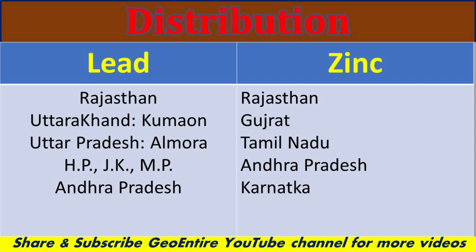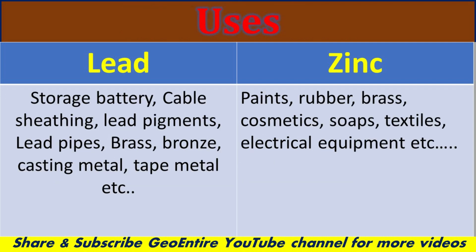The uses of lead include storage batteries, cable sheathing, lead pigments, lead pipes, brass, bronze, casting metal, and type metal. Lead (Pb) ore is used for both industrial and commercial purposes in making these products.